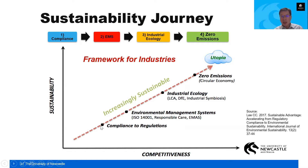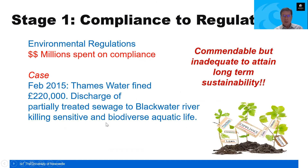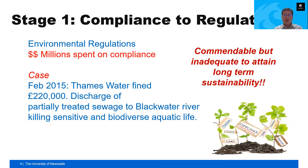Looking at stage one — compliance to regulations — the question is what is this all about? There are a lot of environmental regulations to comply with, depending on where you operate. In the United States or Europe there are compliance requirements for different states as well as federal regulations. You may be spending hundreds of millions of dollars to comply, which is particularly challenging for a global company operating across many countries and regions.